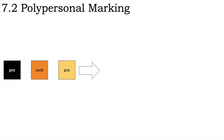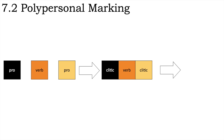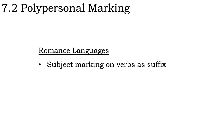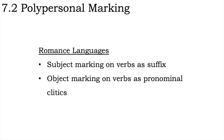Polypersonal marking. The pathway by which polypersonal marking on verbs develops is quite straightforward. Through grammaticalisation, independent pronouns become cliticised with the verb root and eventually become inseparable affixes, often with some phonological reduction from their earlier form. Various romance languages actually offer good examples of this. Most romance languages continue the Latin system of already marking the subject with an inflection on the verb. However, romance languages also mark objects on the verb as well, using pronominal clitics, though the placement of these clitics varies from language to language and depending on the exact situation.